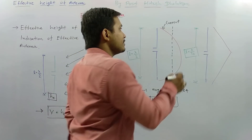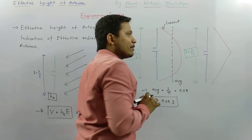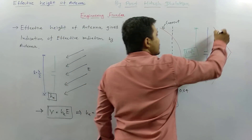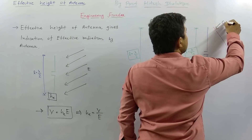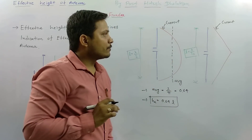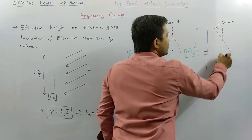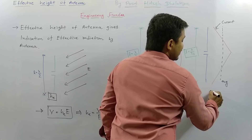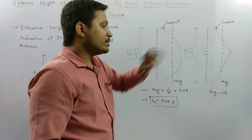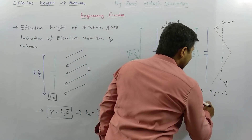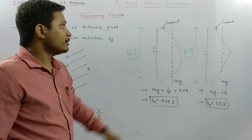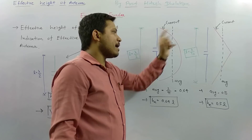The second case is a dipole of length L equals lambda by 10. For this dipole, the current distribution is a triangular current distribution. The average of a triangular distribution with respect to its maximum is 0.5. So effective height He equals 0.5 into L. This is what effective height based on physical current distribution happening on the antenna means.